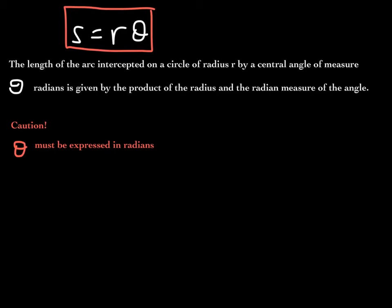So S represents arc length — it's equal to the product of the radius of the circle and the measure of angle theta. What's very important is that theta here is expressed in terms of radians, not degrees. So if a problem has you calculating arc length, make sure theta is in radians. If it happens to be in degrees, then just convert it to radians first. Theta here must be in radians.